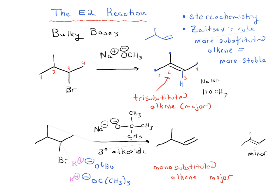This is called the t-butoxide ion, and this is an example of a strong, bulky base. As another note, you may also see it with the alcohol as the solvent — NaOtBu in the presence of tBuOH. That's just a solvent; it doesn't really participate in our reaction here, it's just dissolving.